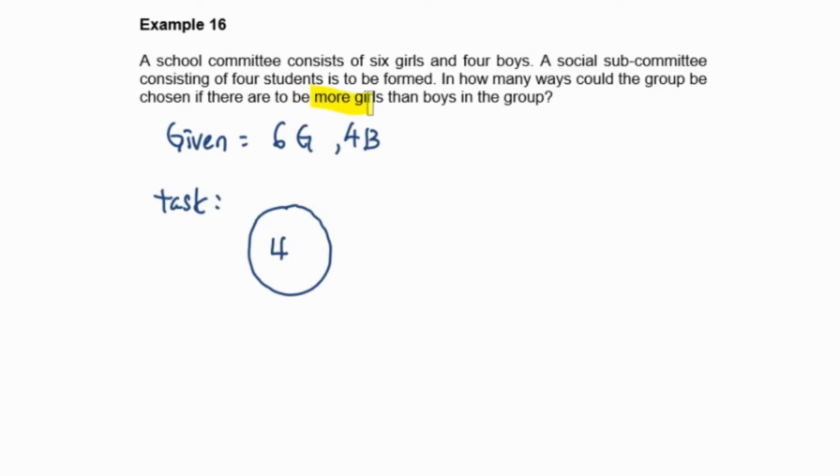When we have a condition like this, we have to consider it one by one. For the first case, Case 1, in these four people it must have more girls, so that means you will have four girls and no boys.